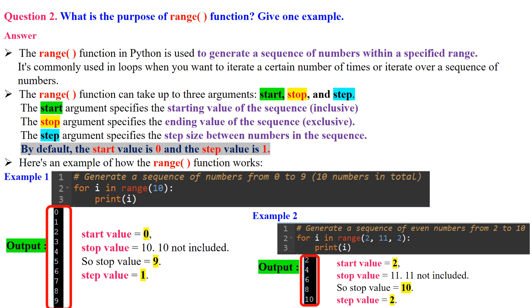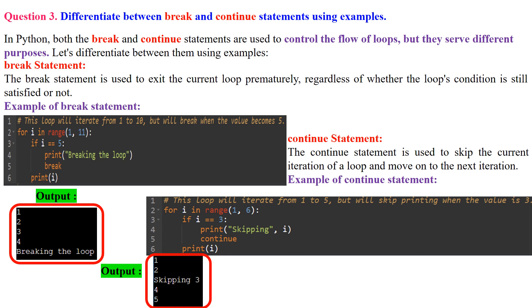In example two, range(2, 11, 2) generates even numbers starting from 2 (inclusive) up to 11 (exclusive) with a step size of 2 — start=2, stop=11 (not included, so last value is 10), step=2. The loop iterates through the sequence and prints the even numbers. The range function is useful for iterating over a specific range of indices in a list or performing an action a certain number of times.